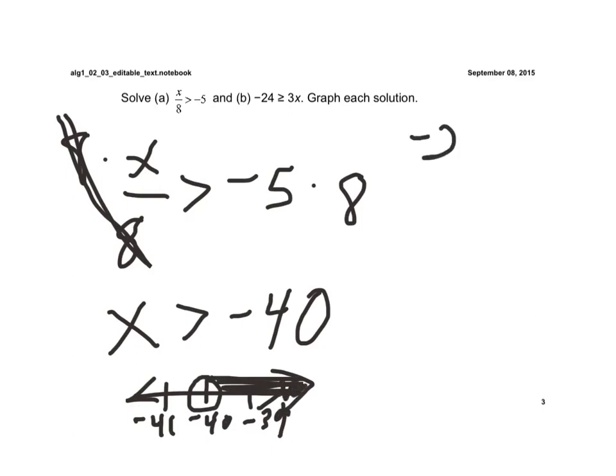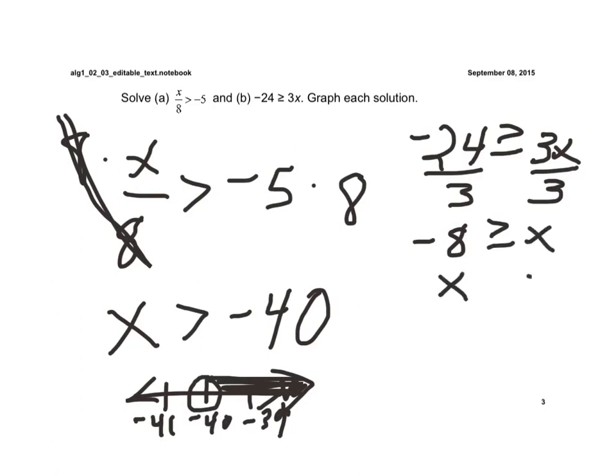And on example 2 here, if we have 24, it's greater than or equal to 3x. Now, x being multiplied by 3, so I'm going to divide both sides by 3. I get negative 8 is greater than or equal to x. Now remember, we always want to write the variable on the left, the number on the right.